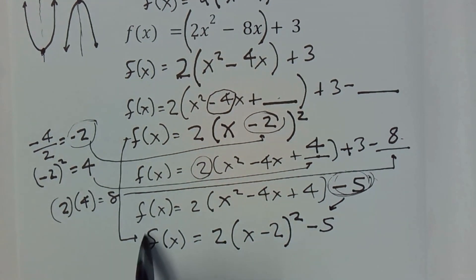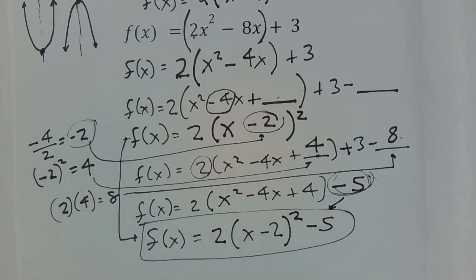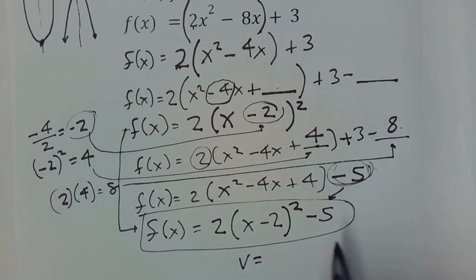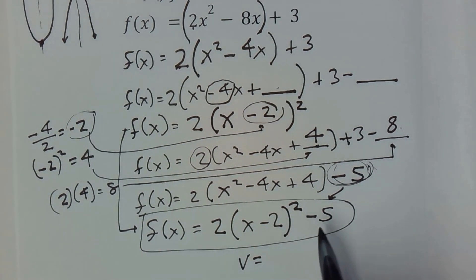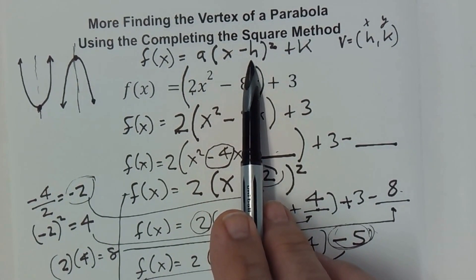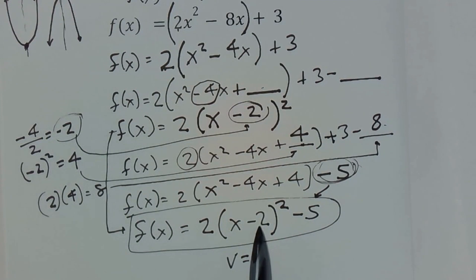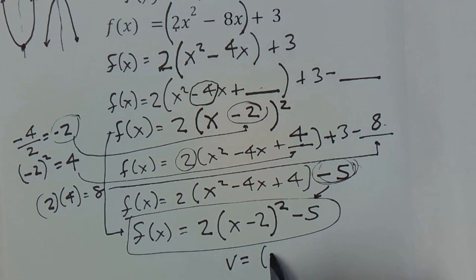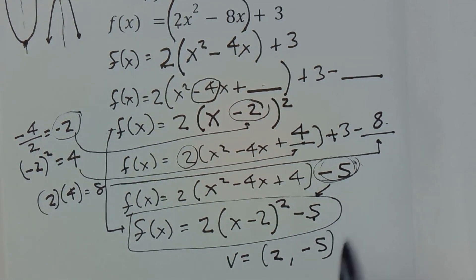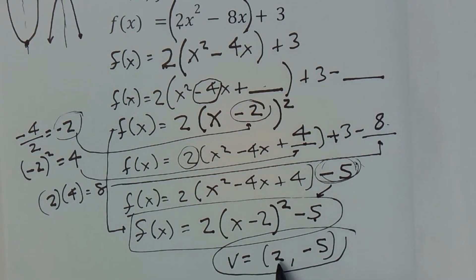So now we have it in our vertex form. I can go ahead and find what the h and the k are. Now mind you the h is, up here we have the negative h. So whatever this is it's the negative of that. So I'm going to change the sign. So it's a negative of negative 2, change the sign so that my x is a 2 and then this is my k. I don't change the sign I just bring it down. So our vertex of that parabola is 2 comma negative 5.